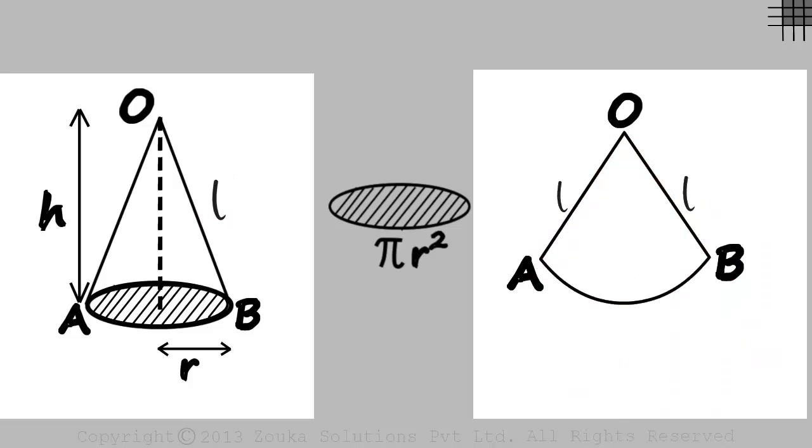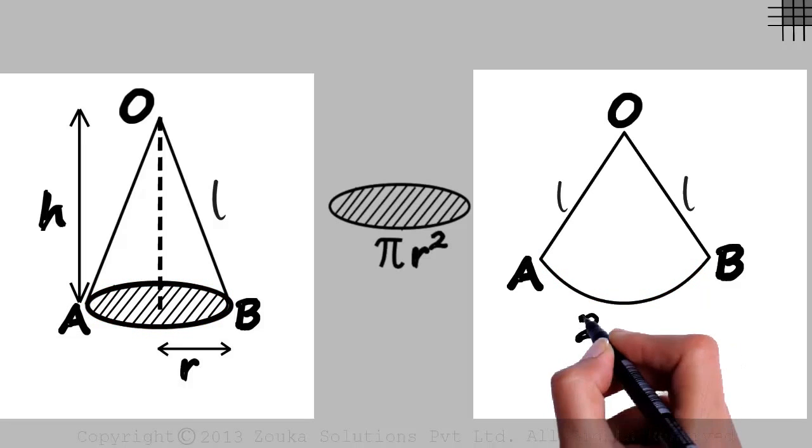Here's another interesting question. What will be the length of arc AB? This is an arc as we know that a sector is part of the circle. This arc is actually the circumference of the circular base. So the length of this arc will be 2 pi r.